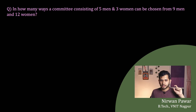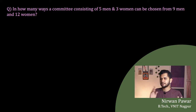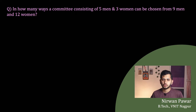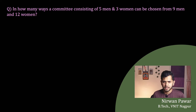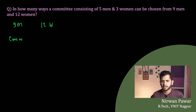Let's get started with the first question. In how many ways can a committee consisting of five men and three women be chosen from nine men and twelve women? What is given in the question: we have a total of nine men and twelve women, and I want to make a committee with five men and three women.